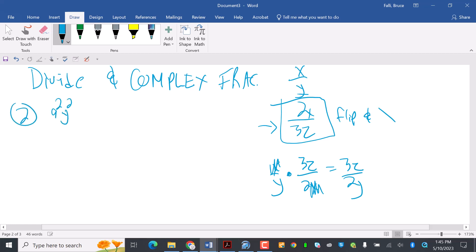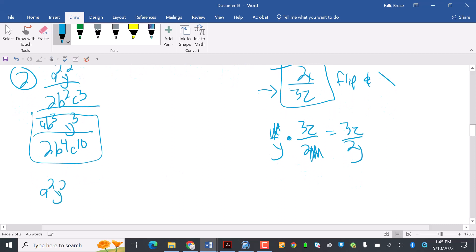2 is a squared y squared over 2b squared c cubed over ab cubed y cubed over 2b to the 4th c to the 10th. So I'm going to take this bottom part and I'm going to flip it and multiply it. So a squared y squared over 2b squared c cubed times, flipping it, bottom goes on the top, 2b to the 4th c to the 10th over ab to the cubed y to the cubed.